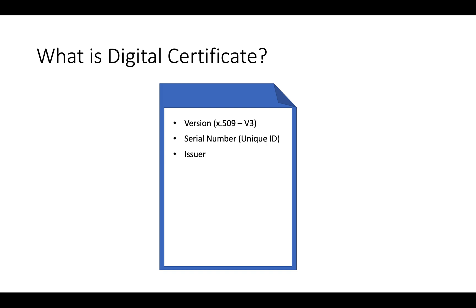The Issuer field tells who has issued this certificate. The Valid Dates field shows when the certificate was issued and until what date it is valid. Like if you are doing an online course or CCNA certification, they are valid for only a few years. Similarly, this certificate also has some validity, after which it will not be valid.